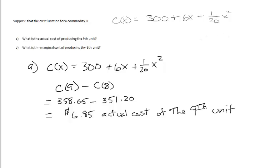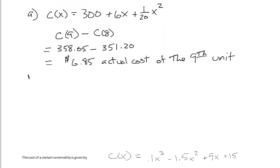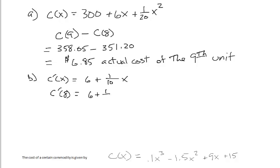Now when they ask for the marginal cost of producing the 9th unit, that's when we take the derivative. So in part b we find c'(x), which is equal to 6 + (1/10)x. When we want the marginal cost of the 9th unit, we plug 8 into the derivative. So c'(8) = 6 + (1/10)(8), which equals $6.80. And this is the marginal cost of the 9th unit.